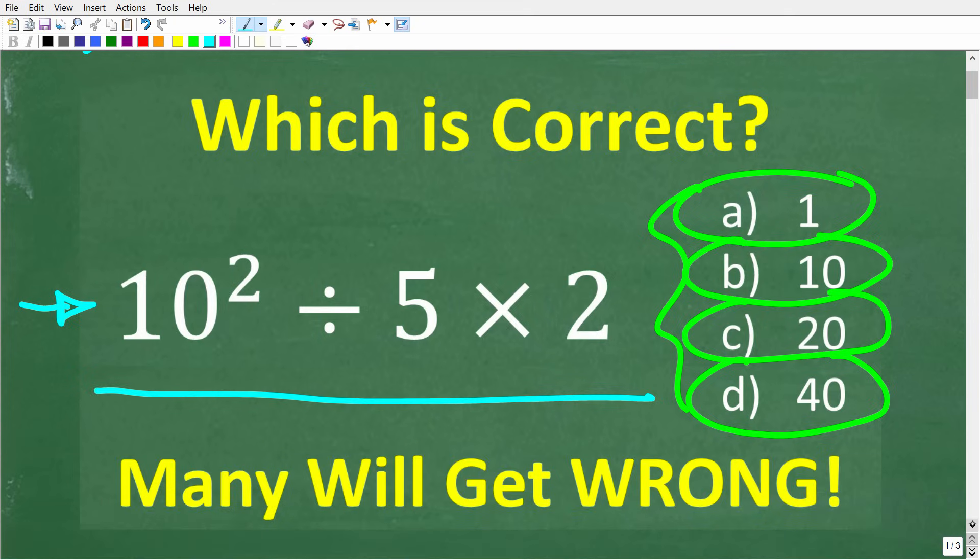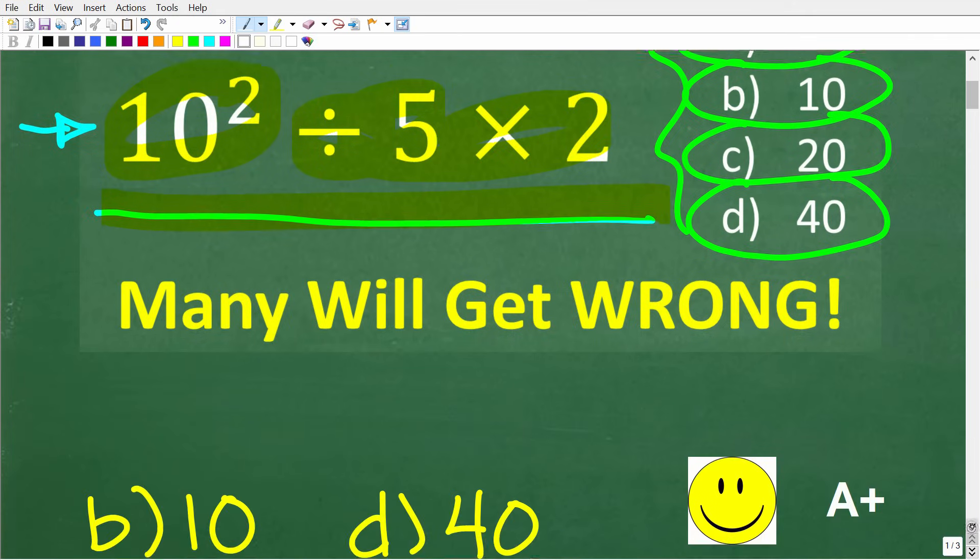All right, so one more time, here is our problem. Seems very easy, but why are a lot of people going to get this wrong? So we have 10 squared divided by 5 times 2, and the correct answer is what?